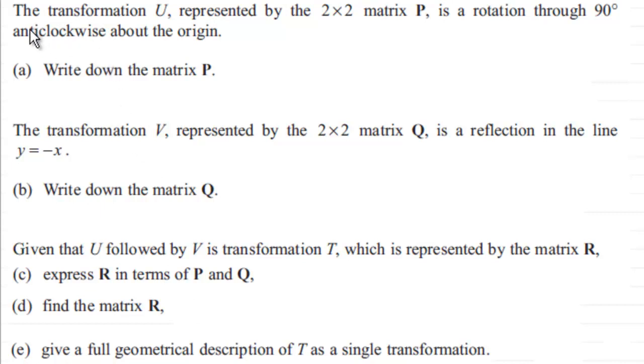So let's see what we got. First of all, we're told the transformation U represented by the 2x2 matrix P is a rotation through 90 degrees anticlockwise about the origin, and what we've got to do is write down that matrix P. Now there's plenty of tutorials on my website on this, but I'll just quickly run through how we form the transformation matrix.